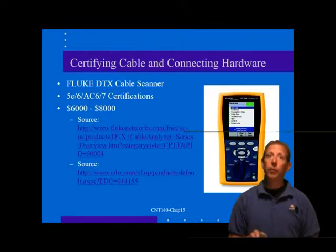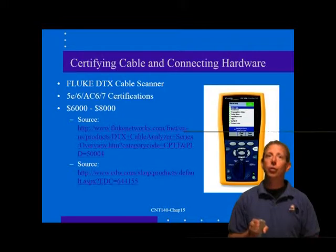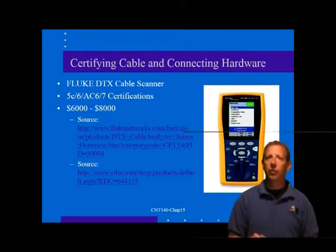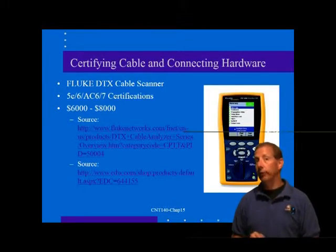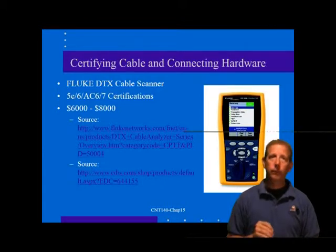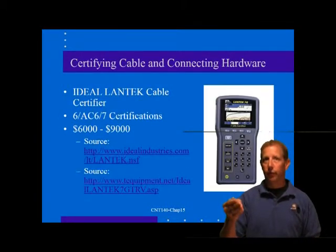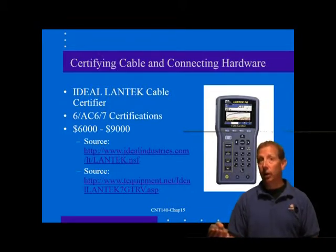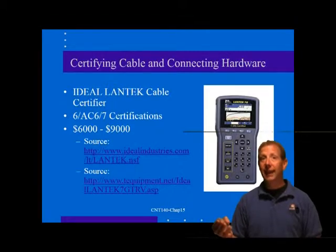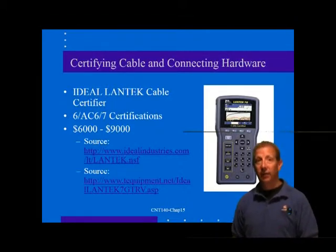As the cabling installer, you are responsible for using only components of a proper category, installing them properly, and field testing of the installed cable links to verify proper operation. If you expect to provide a LAN wiring system with a particular level of performance, you must use only components and cable certified for that category of operation or higher. For example, for a Cat-3 installation you may use Cat-3, 5E, or 6 components, but you must use only Cat-5E or higher cable and connecting hardware for a Cat-5E system.